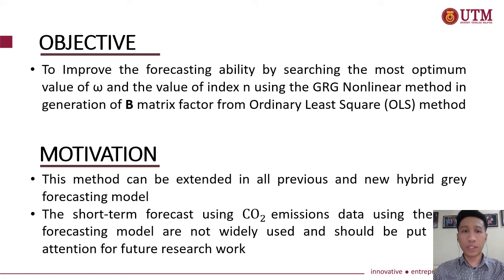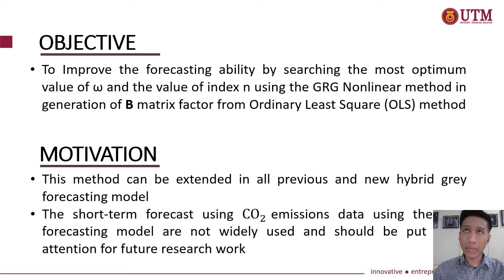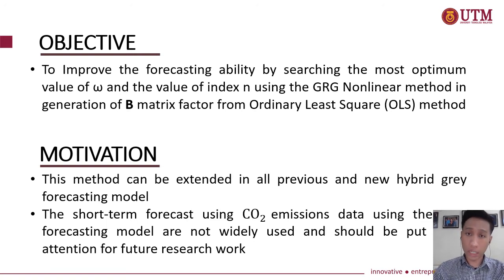The main objective of this research is to improve forecasting ability by searching for the most optimum value of epsilon and value of index n in the generation of the B matrix factor from the ordinary least squares method. The motivation is that this method can be extended to all previous and new hybrid gray forecasting models, and short-term forecasting using carbon dioxide emission data should receive more attention in future research.